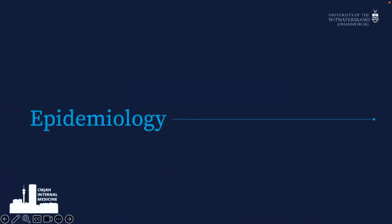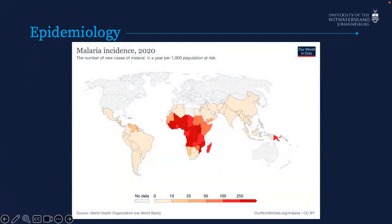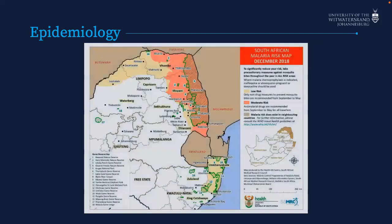Looking at epidemiology — this is the world, and you can see that malaria incidence is really focused on Africa, with 90% of malaria cases occurring on our continent and some in Southeast Asia. Closer to home, malaria areas are the northern and northeastern parts of Limpopo, the eastern parts of Mpumalanga, and the eastern parts of KwaZulu-Natal.